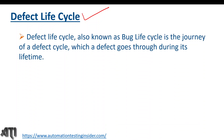Defect life cycle, also known as bug life cycle, is the journey of a defect — the various stages and statuses it goes through during its lifetime.